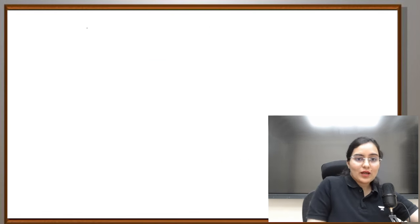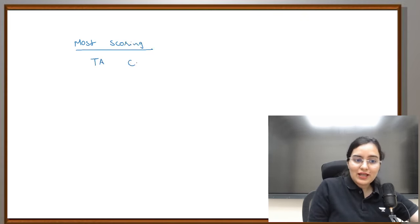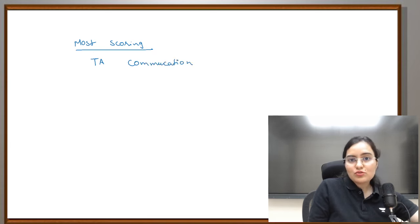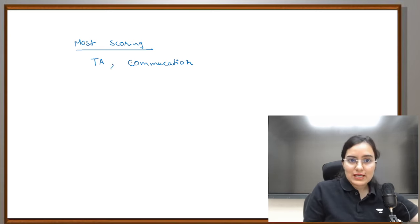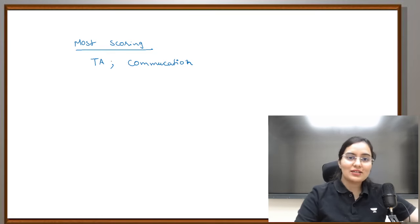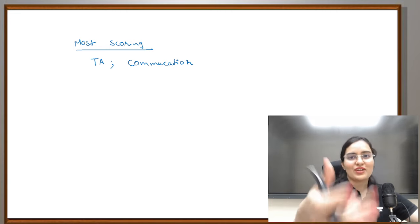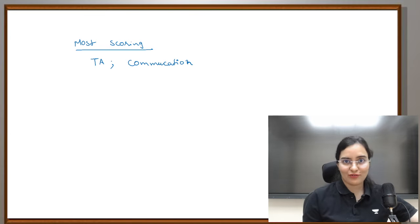One more thing to highlight — the most easily scoring units in paper 1 are teaching aptitude and communication. The reason is that questions are very direct — no too much hi-fi or tricky questions. Most questions you can recognize and give the correct answer. So these two units you can score easily. That does not mean you should prepare less in them — it actually means you should practice a bit more to keep a competitive advantage over your competitors, because there are lakhs and lakhs of students and you have to get your JRF.